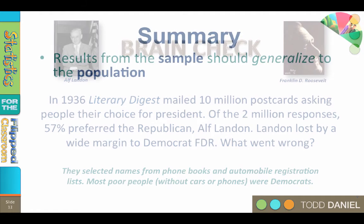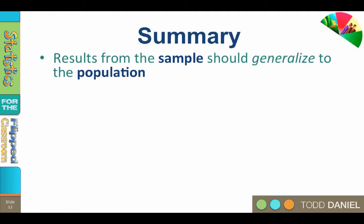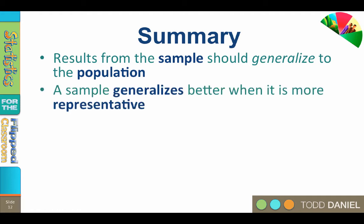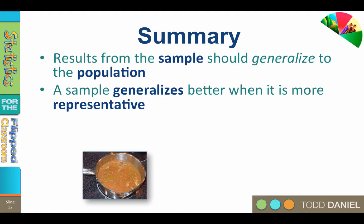Let's summarize what we've learned about populations and samples. Results from the sample should generalize to the population — that is, what is true about the sample should apply in general to the population. A sample generalizes better when it is more representative of the population. For example, consider cooking stew: you want to know if the stew is ready to serve. Are the carrots fully cooked? Does it need more salt? Might it contain an ill-cooked bit of beef or underdone potato?